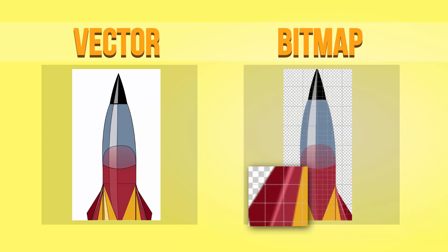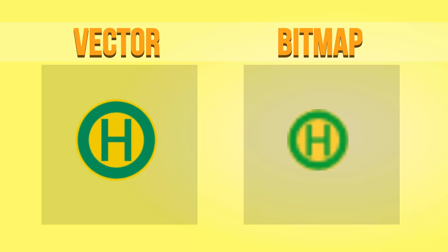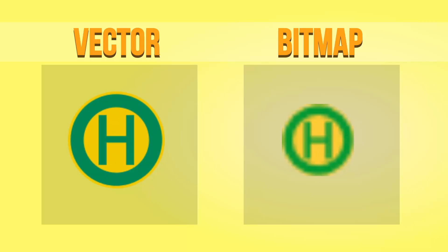There are really two big advantages of vector graphics which are especially relevant when making game art. First, the editing capabilities. Due to the structural description of vector graphics, really any object can be modified at any time. So if you've added a line in the beginning which you don't like, you can edit and adjust the line, change its properties all the way until the end. The second advantage is scalability. Due to the nature of the vector graphics file, all objects can be resized as much as you like — made infinitely small or infinitely large without any loss of quality.